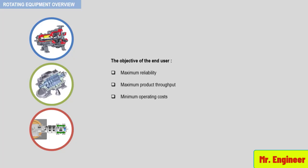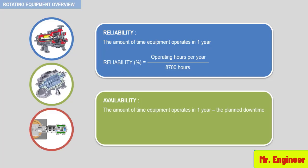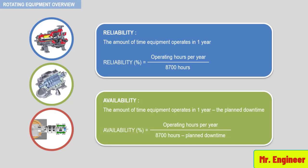The definition of reliability is the amount of time the equipment operates in one year, calculated using the following formula: it is equal to the operating hours per year divided by 8,700 hours, which represents the number of hours in a year. Good reliability and availability indexes are greater than 95%. Reliability does not take into account planned downtime.